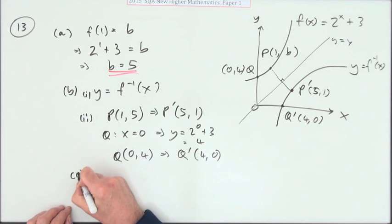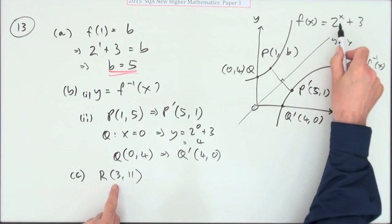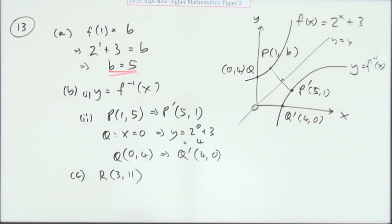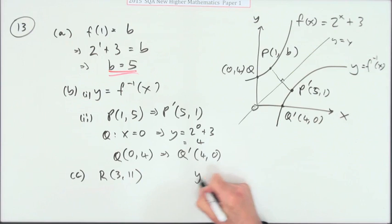Now there's a part c. Part c says r 3, 11 also fits this. That's right, 2 to the power 3 is 8, and plus 3 is 11. But where would it be, not in that graph, or in this image? Where would it be in the graph of y equals 4 minus f of x plus 1?